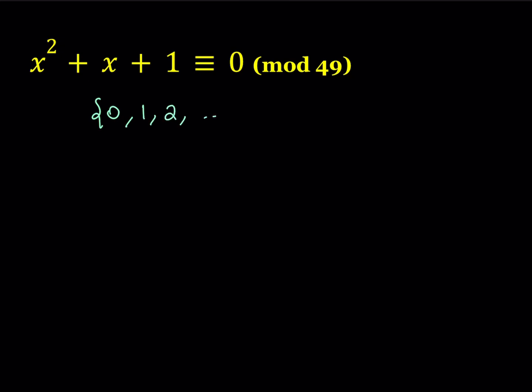0, 1, 2, dot dot dot, all the way up to 48. These are possible remainders. I'm not putting a bar over them indicating that they're remainders, just writing them loosely like this.